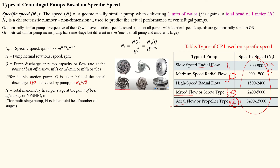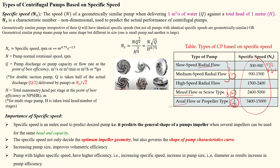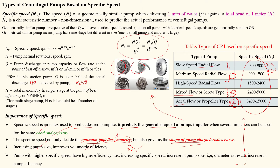The specific speed values shown are in FPS units (foot-pound-second), not SI units. The importance of specific speed is that it predicts the desired pump shape — whether open, closed, semi-open, axial, mixed, or radial — for a given head and capacity. Specific speed not only decides the optimum geometry and size, but also determines the characteristic curve of the impeller. Increasing pump size increases volumetric efficiency, which in turn increases specific speed.